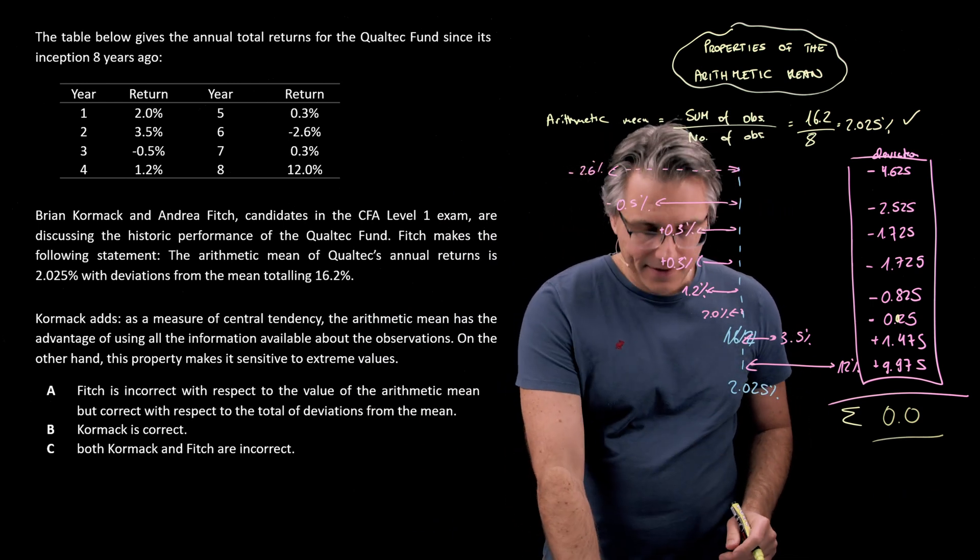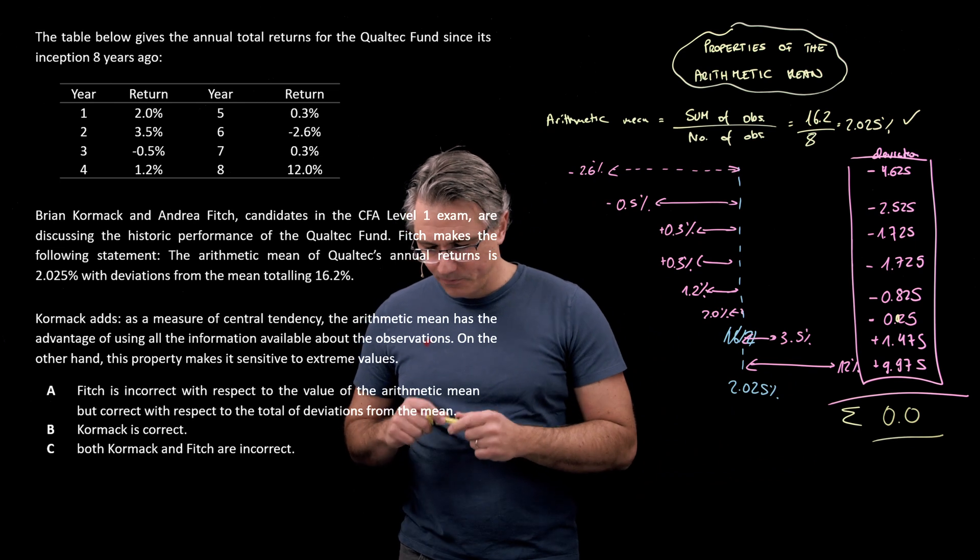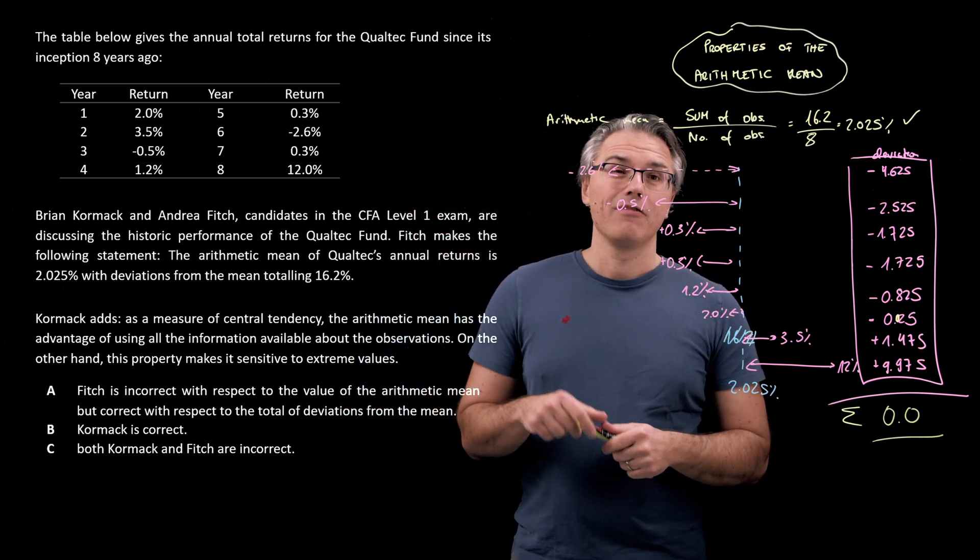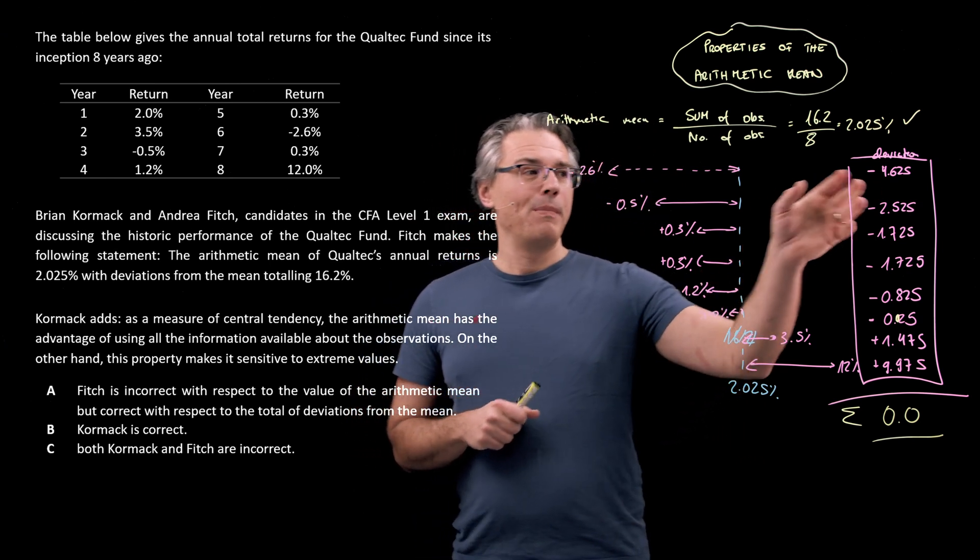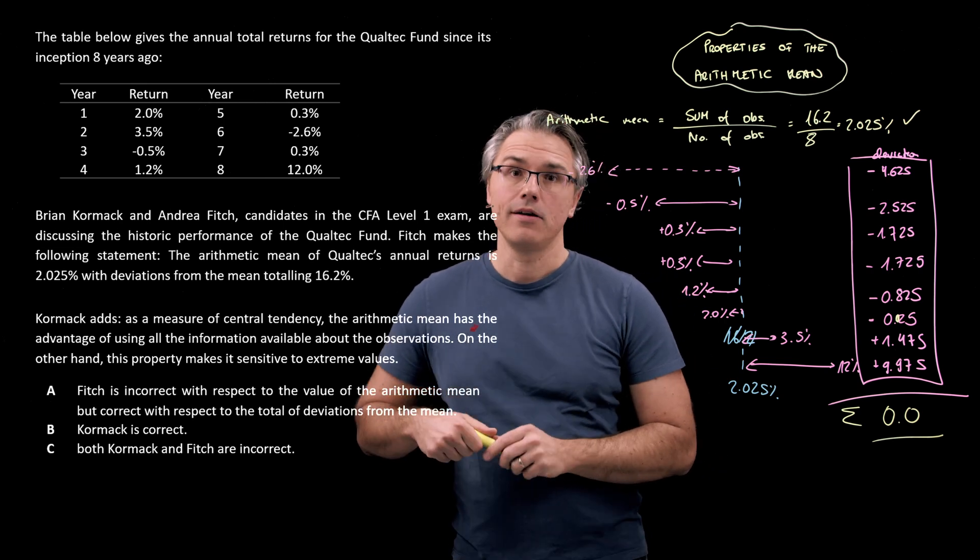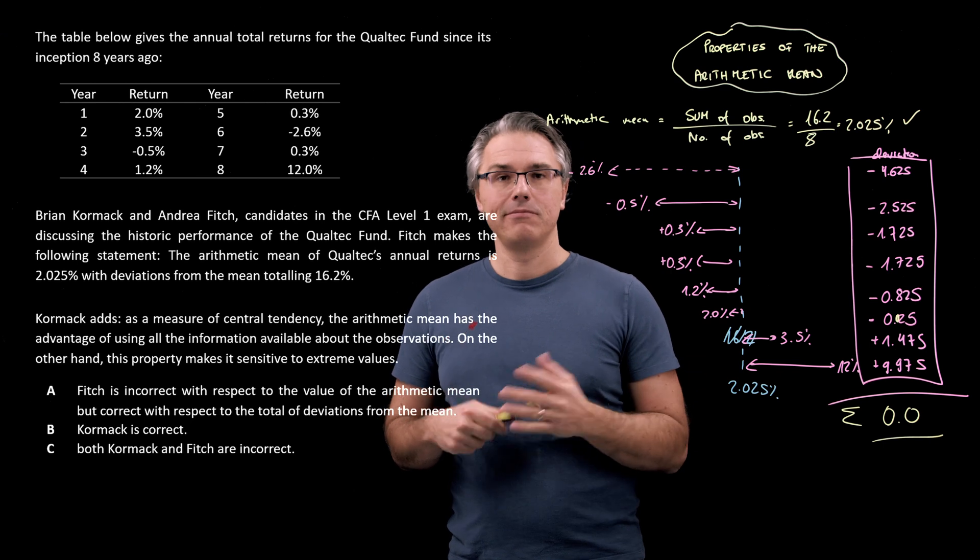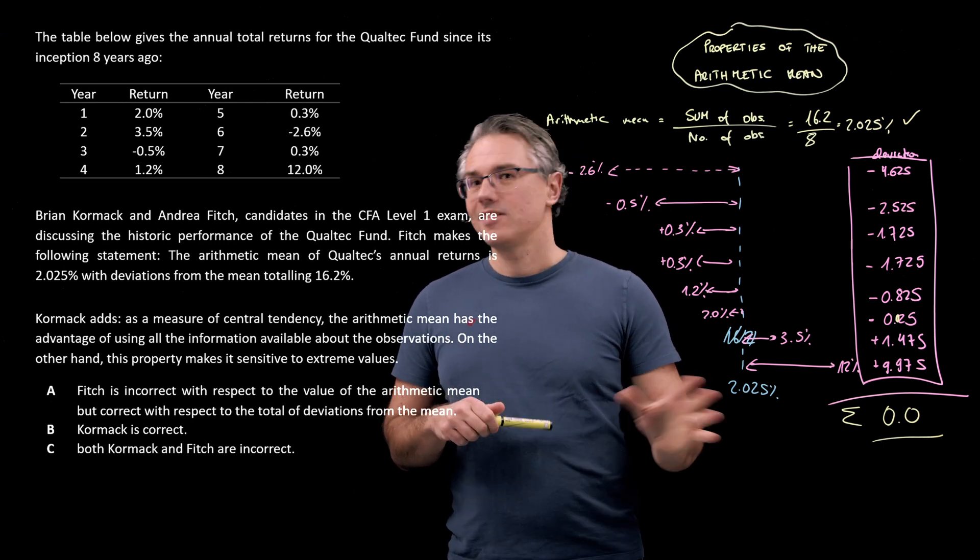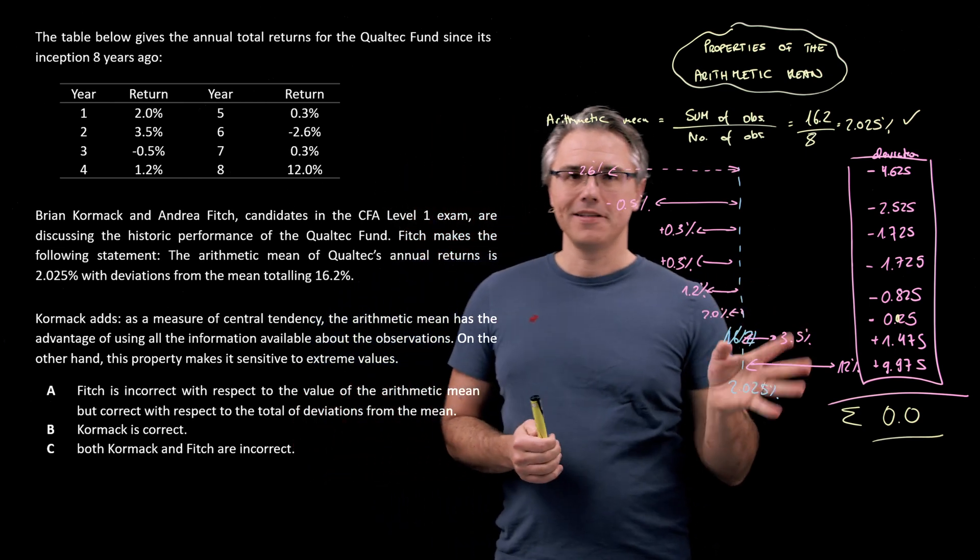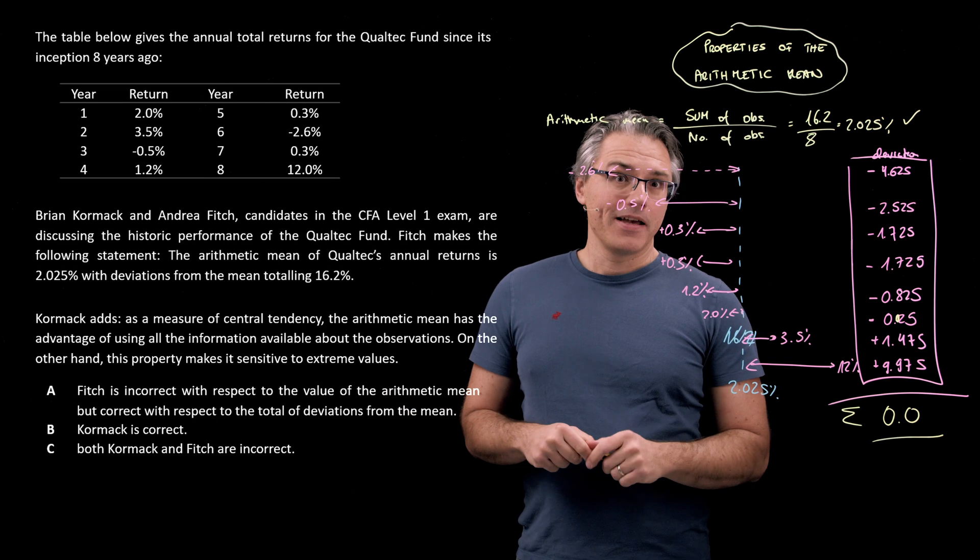So look, that's one of the fundamental properties of the mean. The mean is a value, or the arithmetic mean, which makes the sum of all the deviations from it, obviously when we respect the signs, equal to 0. That's its basic property. So in an exam, never compute this, always appreciate that it's going to be 0, and you should get the points.